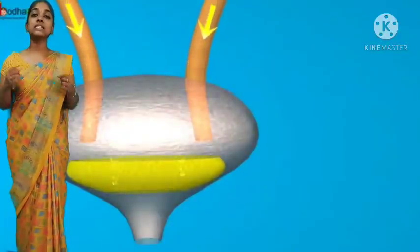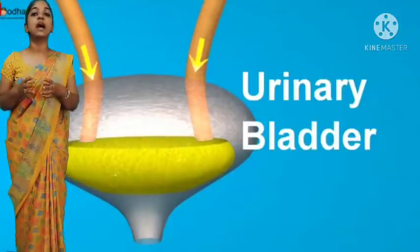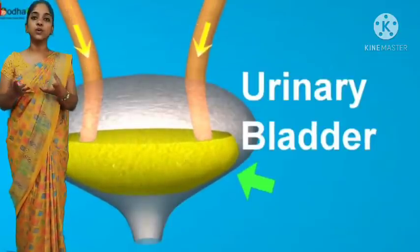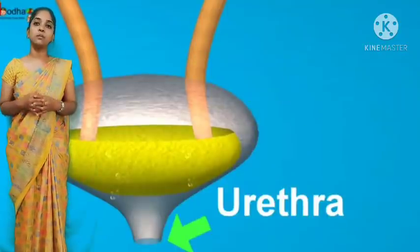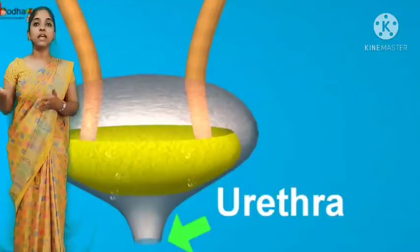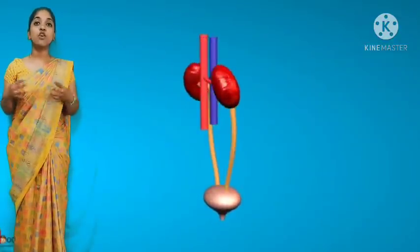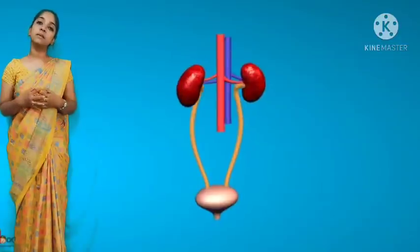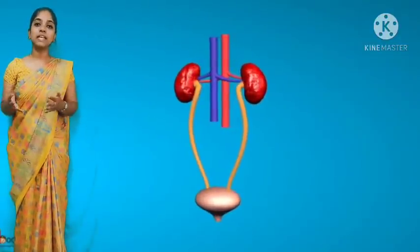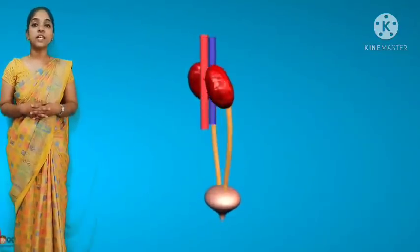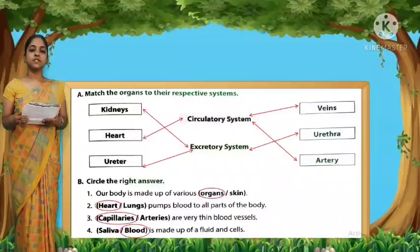The urinary bladder is a muscular bag which stores urine. The last part is the urethra — it helps pass urine out of the body. So the excretory system helps filter the blood and remove harmful waste materials from our body. We have now seen both the circulatory and excretory systems.